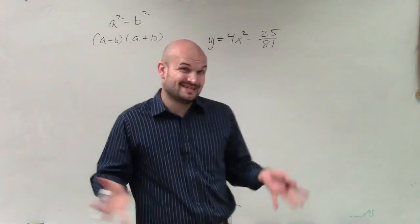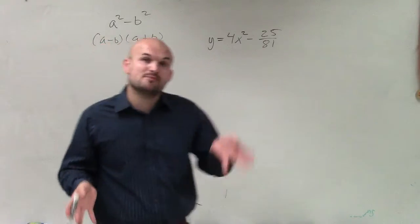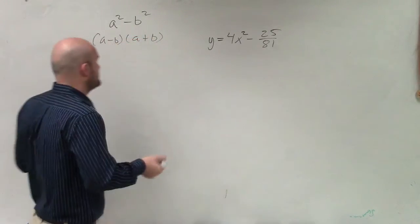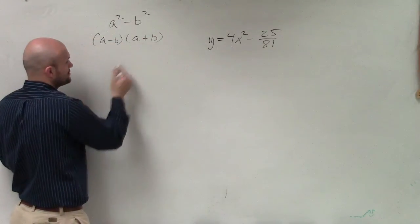So what I need to do is determine, well, is this in the form of a squared minus b squared? And if it is, then I can determine what a is and what b is. So what I'll do is I'm just going to assume it is the difference of two terms, like a squared minus b squared.